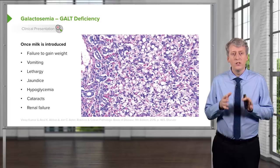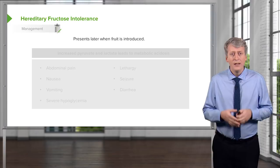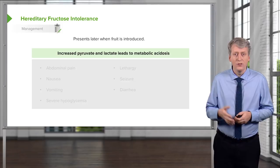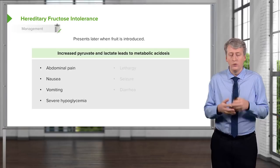Very rare, but we can also see hereditary fructose intolerance. This generally presents once fruit is introduced — these children can't metabolize fructose well. They generally develop increased pyruvate and lactate, which leads to a metabolic acidosis. These children can develop abdominal pain, nausea, vomiting, and a severe hypoglycemia which ironically is not relieved by fruit juice. They can develop lethargy, seizure, and diarrhea. So these children really need to avoid fructose in their diet.